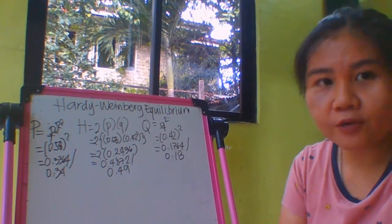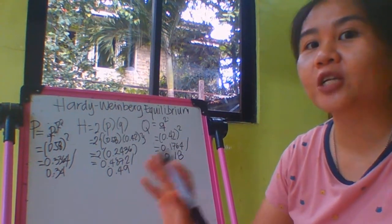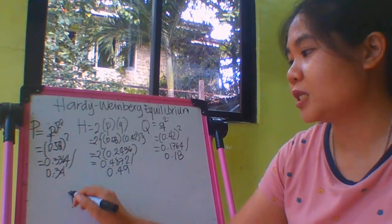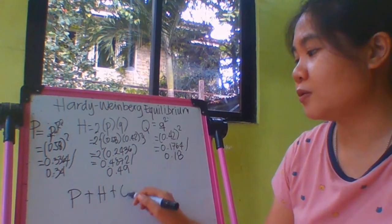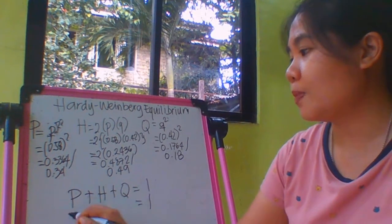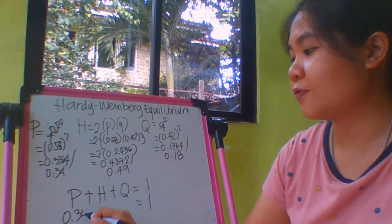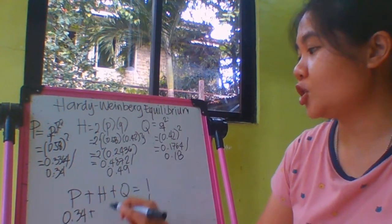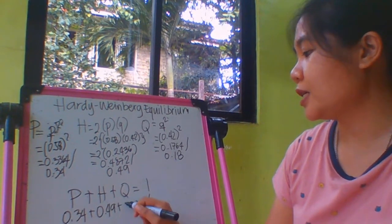The value for Hardy-Weinberg is also equals to 1, pretty much like the gene and genotypic frequencies. So you have P plus H plus Q equals 1. So we have the value of capital P is 0.34 plus H is 0.49.